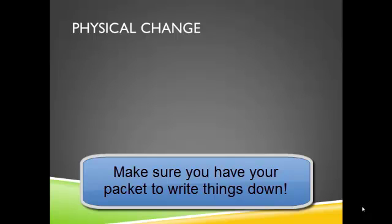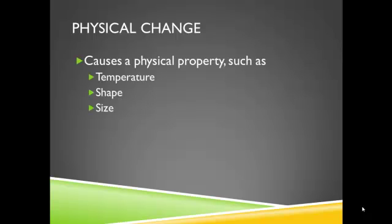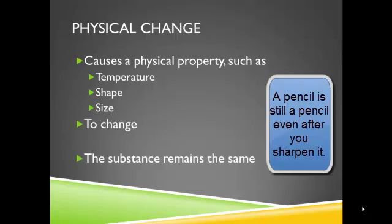First I'm going to talk a little bit about what a physical change is. In a physical change the object doesn't really change what it is. It causes the physical properties — things like temperature, shape, and size — to change. Think about molding silly putty: that's changing its shape, but it's still silly putty. So the actual substance is going to remain the same.